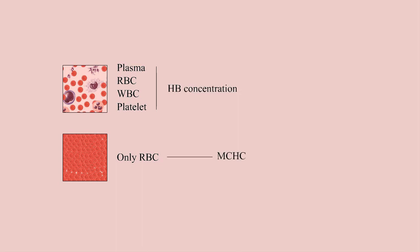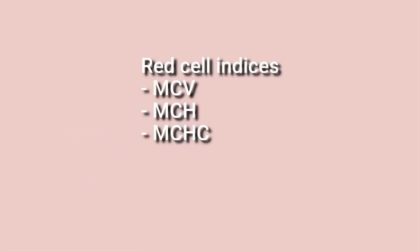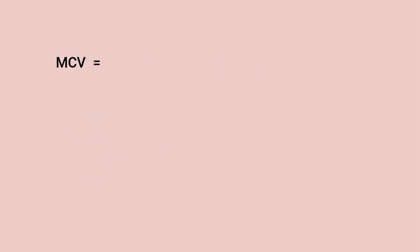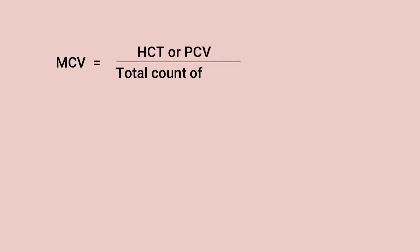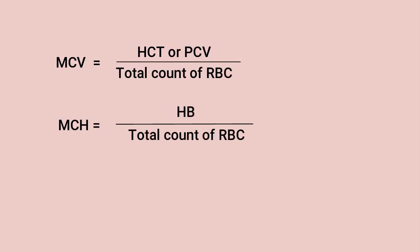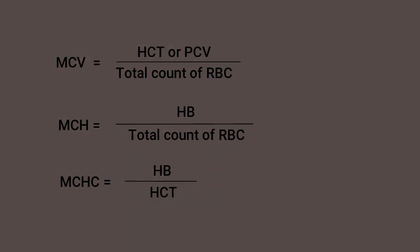Together, MCV, MCH, and MCHC are called the red cell indices. MCV can be calculated by dividing the hematocrit value by the red blood cell count. MCH can be calculated by dividing hemoglobin concentration by the red cell count. MCHC can be calculated by dividing hemoglobin concentration by the hematocrit value.